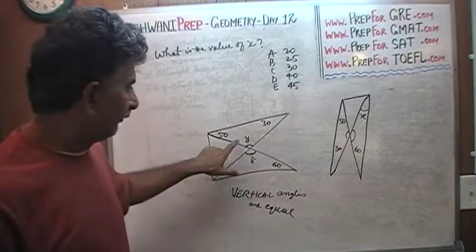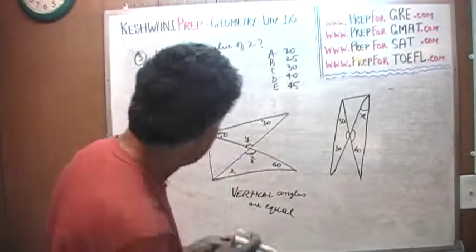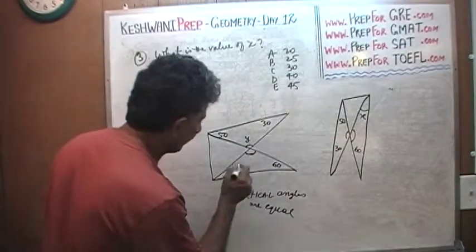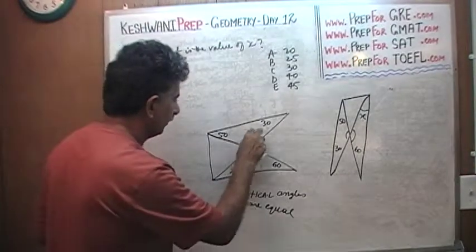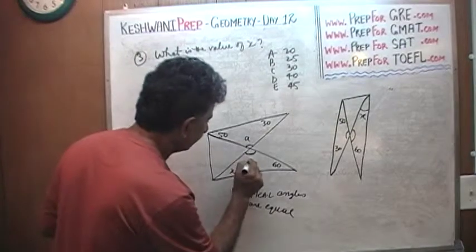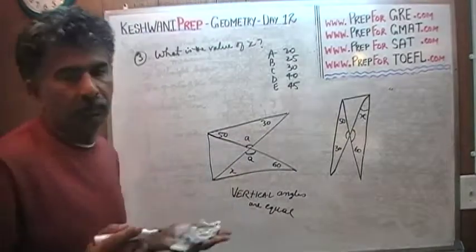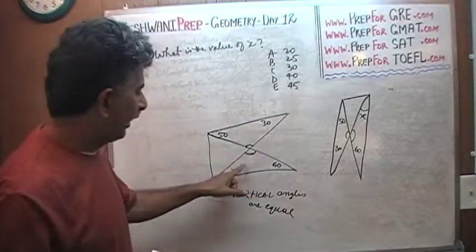Well, if they are equal, then if you are going to call this y, then this must also be called y. They cannot have different names because they are equal. If you are going to call the top angle a, then this one also has to be a because they are equal. You can call them anything you want. It doesn't matter what you name. It doesn't have to be y.